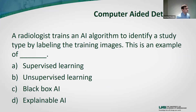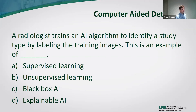Second question: A radiologist trains an AI algorithm to identify a study by type by labeling the training images. This is an example of A) supervised learning, B) unsupervised learning, C) black box, or D) explainable AI. If you answered A, supervised learning — you are correct. Very well done.